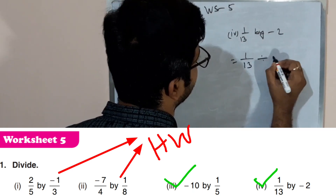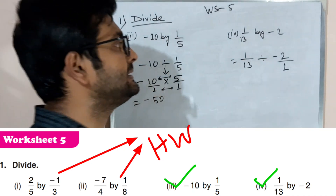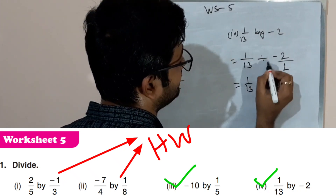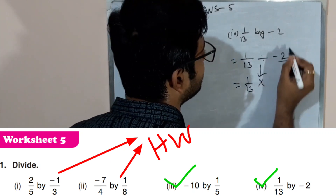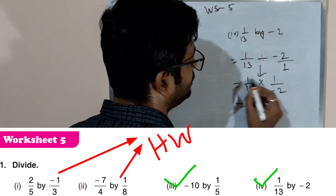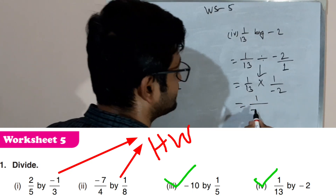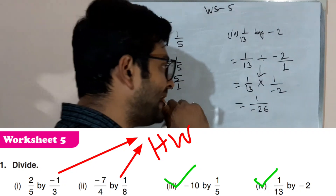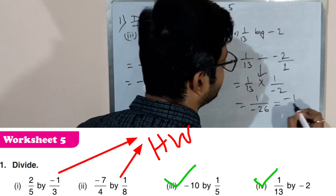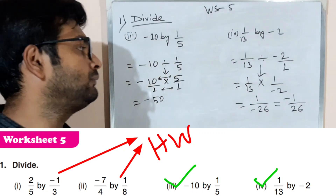Sum number four: 1 by 13 divided by minus 2. We can write minus 2 as minus 2 by 1 in rational number form. Now change divide to multiply and take the reciprocal of minus 2 by 1, which is 1 by minus 2. Multiply numerator by numerator and denominator by denominator: 1 into 1 over 13 into minus 2 gives 1 by minus 26. Since the denominator is negative, write in standard form: minus 1 by 26.